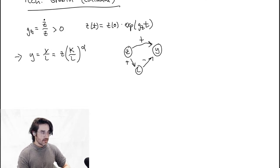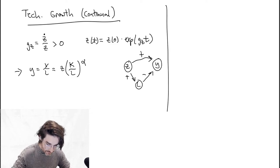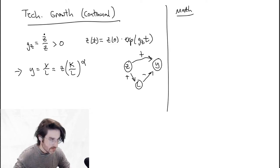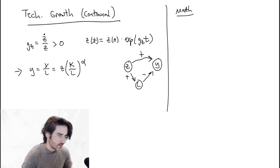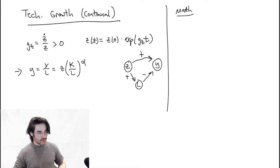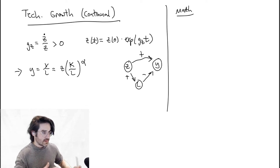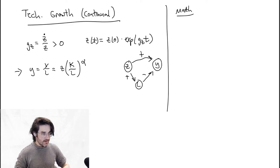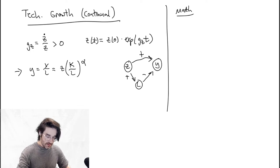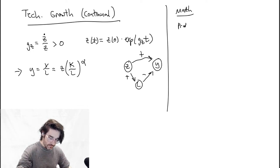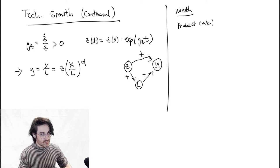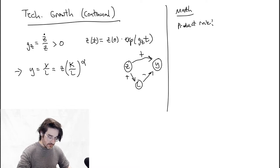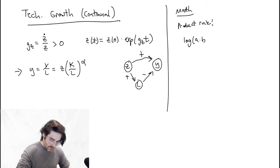Let me do a little mathematical aside. You know those logarithm rules — the log of A times B, or the log of A divided by B — those are also true about growth rates. Let's think about the product rule. There's a product rule for derivatives, and there's also the product rule for logarithms: the log of A times B equals log A plus log B. That's also going to be true for growth rates — the growth rate of A times B is the growth rate of A plus the growth rate of B.